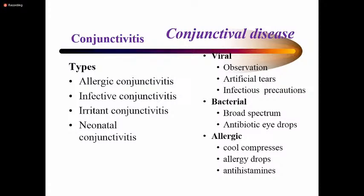Conjunctivitis is inflammation of the conjunctiva with many types: allergic, infectious, irritative, and neonatal conjunctivitis — ophthalmia neonatorum. When viral, the discharge may be watery, though it can be complicated by secondary bacterial infection making it purulent. Allergic discharge is mainly mucoid or watery with intense itching, all associated with a red eye.